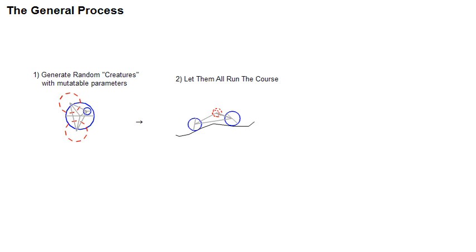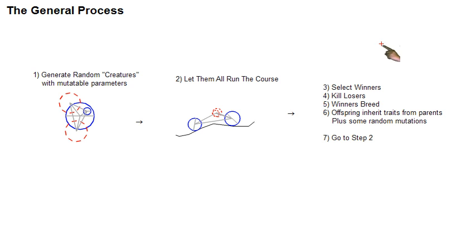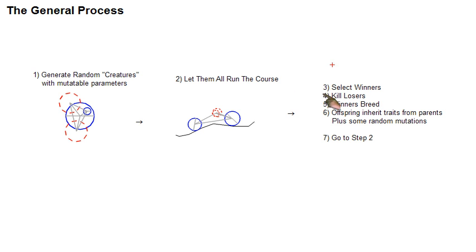The final set of steps goes like this. When all of the creatures in your population have run, you look at who are the winners and what defines a loser. In this case, some of the losers are going to die.